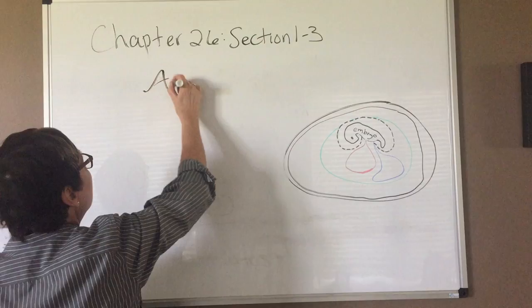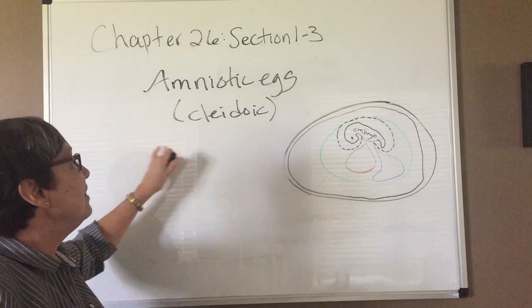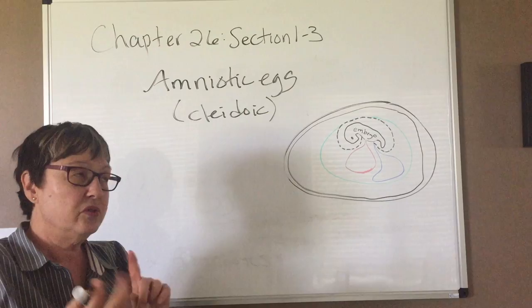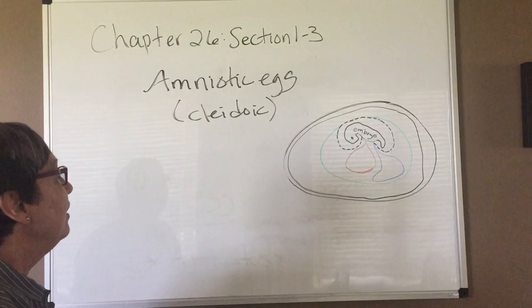Again, this is called the amniotic egg. You may also see it or hear it referred to as the cleidoic egg. But again, remember, because all of these—the birds, reptiles, and mammals—are descendants from organisms that laid these kinds of eggs, they're sometimes called the amniotes.